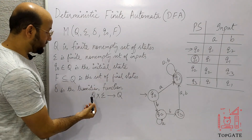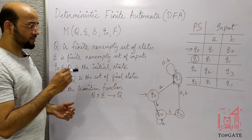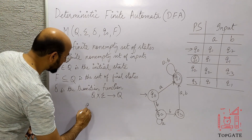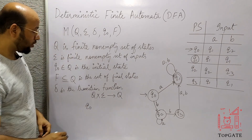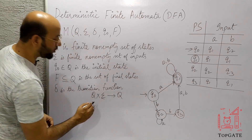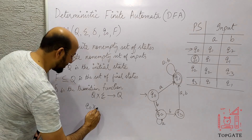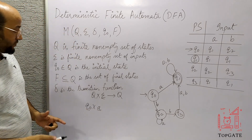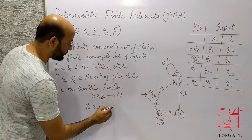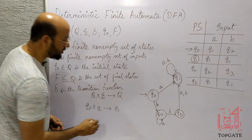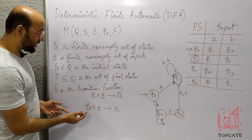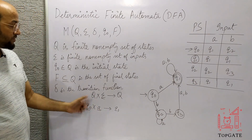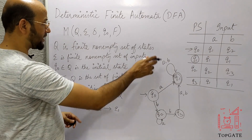How does it transit from one state to another? On any state, say Q0, any input alphabet is applied — say A. As soon as we apply A on Q0, we get some state, maybe Q1. So at any state, I apply any input alphabet and I move on to a certain state. That is the transition function.